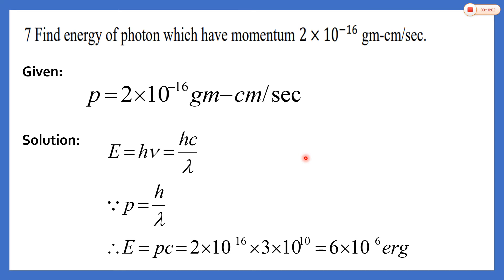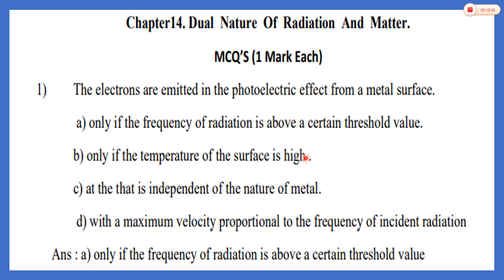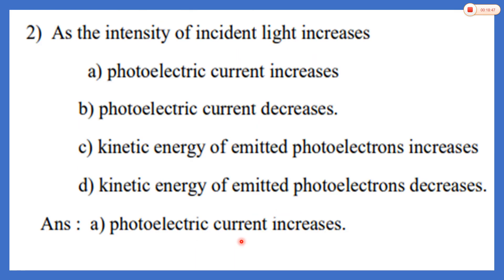Now we will discuss the MCQs. Seven MCQs are given; the first three are theoretical MCQs based on the phenomenon of the photoelectric effect. First MCQ: electrons are emitted in the photoelectric effect from a metal surface — four options are given. The correct answer is option A: only if the frequency of radiation is above a certain threshold frequency. The photoelectric effect occurs only when the frequency of incident radiation is above the threshold frequency.